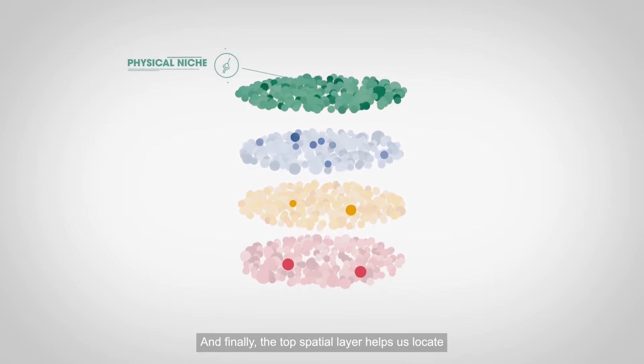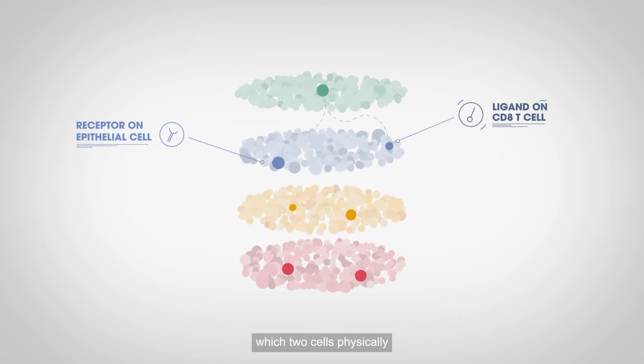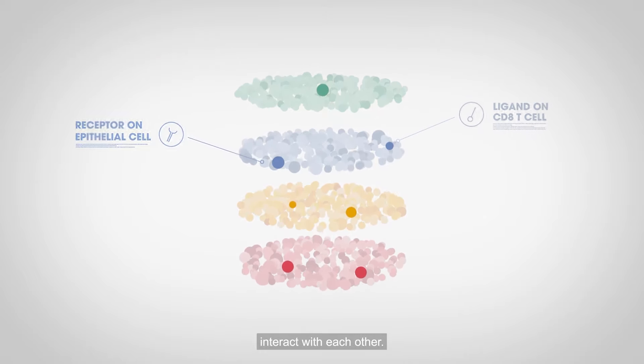And finally, the top spatial layer helps us locate which two cells physically interact with each other.